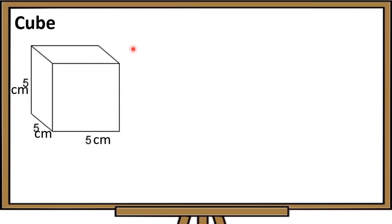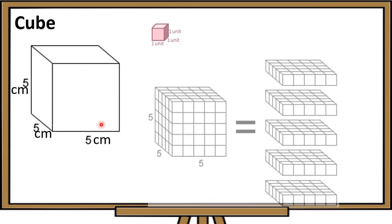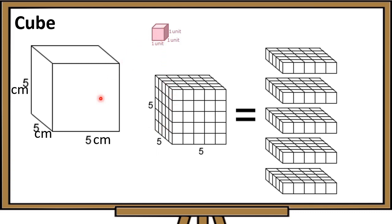Let us visualize the volume of this cube. We have this small cube with a length of 1 centimeter, width of 1 centimeter, and height of 1 centimeter. To visualize the volume, we will put this small cube inside the big box and fill the box with these small cubes. Ito yung result — nung lagyan natin ng cubes itong ating empty box, nung mapuno siya, ito siya.